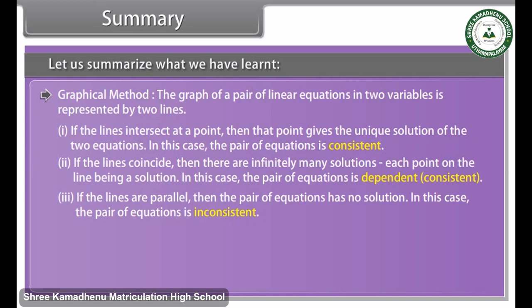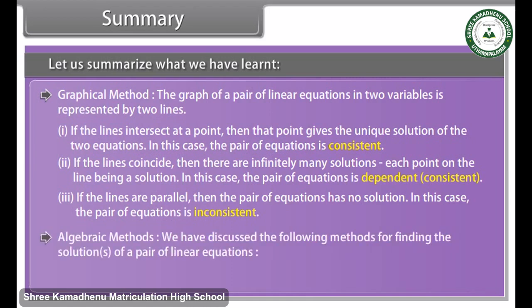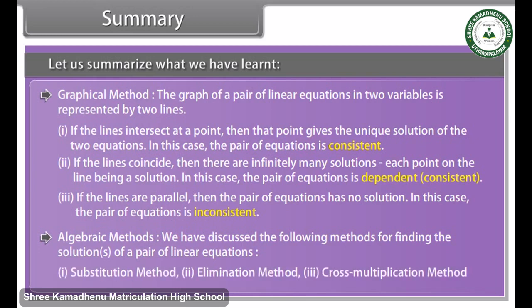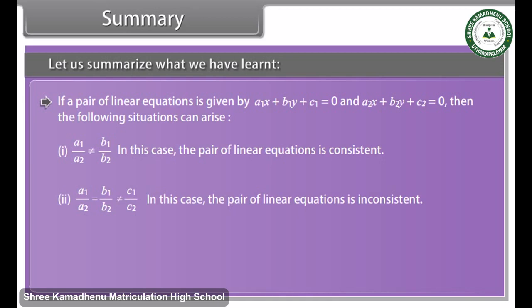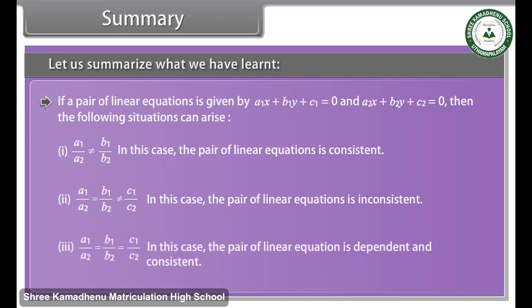Algebraic methods for solving a pair of linear equations include: 1. Substitution method, 2. Elimination method, and 3. Cross multiplication method. For the system a1x + b1y + c1 = 0 and a2x + b2y + c2 = 0: (1) if a1/a2 ≠ b1/b2, the pair is consistent; (2) if a1/a2 = b1/b2 ≠ c1/c2, the pair is inconsistent; (3) if a1/a2 = b1/b2 = c1/c2, the pair is dependent and consistent.